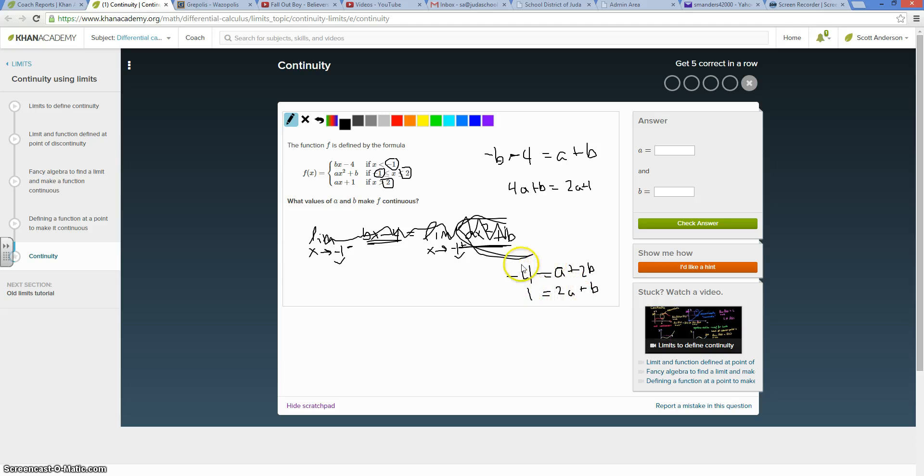A bunch of ways to do this, I'm going to multiply the top by negative 2 and get 8 equals negative 2a minus 4b, and the bottom is still 1 equals 2a plus b. So if I add these up, I get negative 3b equals 9, so b is negative 3.